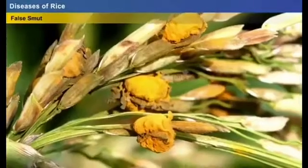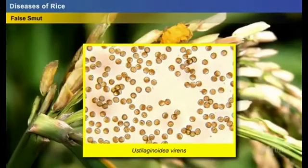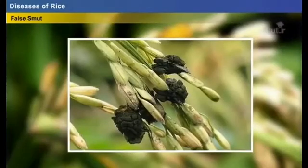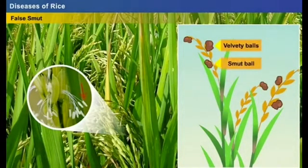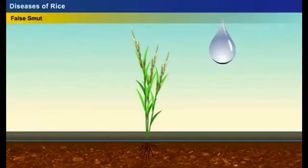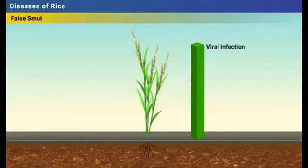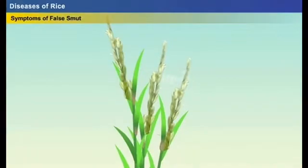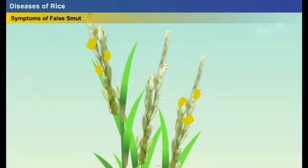False smut is caused by the fungus Ustilaginoidea virens. The symptoms are visible only at the flowering stage. The fungus attacks the young ovary of an individual spikelet and converts it into large velvety balls or smut balls. Low temperature, high relative humidity, and rainfall during the flowering stage increase the incidence of infection. Initially the smut ball is yellow in color and coated by a membrane; after bursting, the color changes to yellowish-green, olive green, and finally greenish-black.